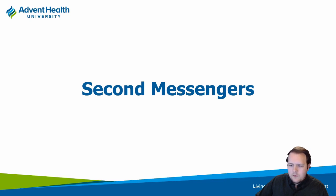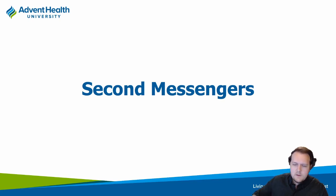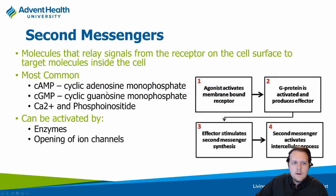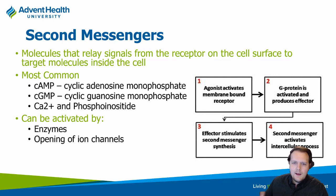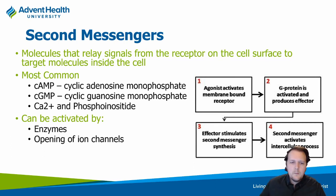We know that the drug interacts with the receptor and then something happens — your blood pressure goes up or down, your heart rate changes. But what goes on in terms of these second messengers? Basically, second messengers are anything secondary to that drug binding to the receptor — whatever happens after that. There's usually some signaling molecule involved. That's the second messenger, the first messenger being the drug itself.